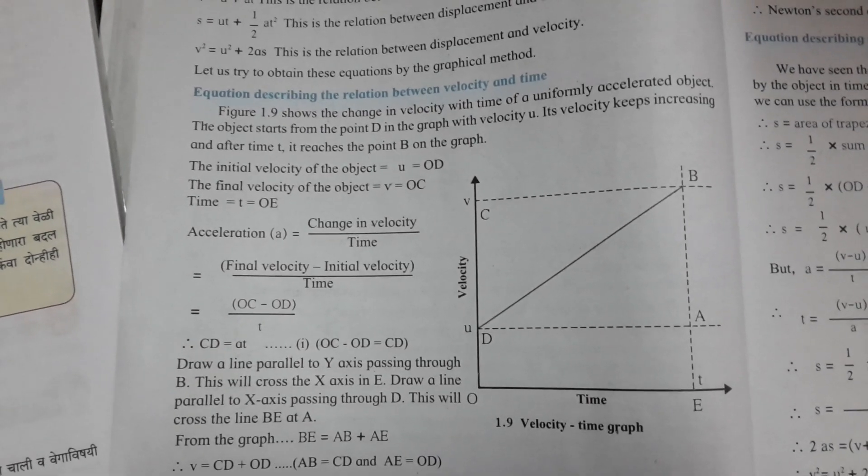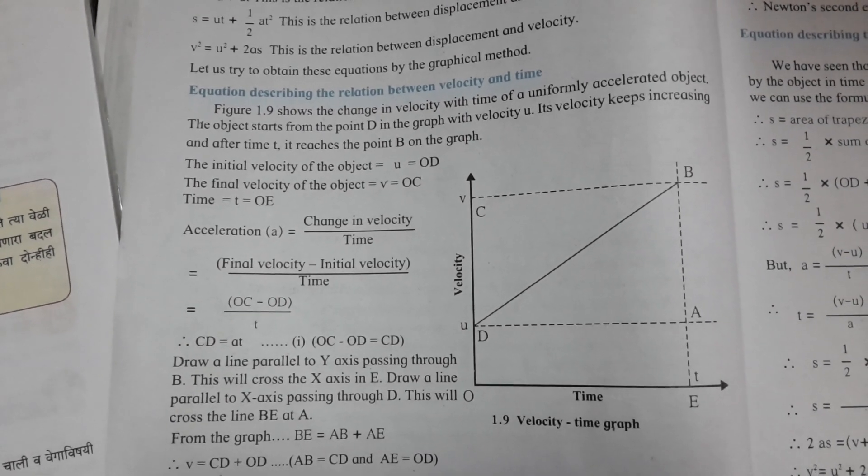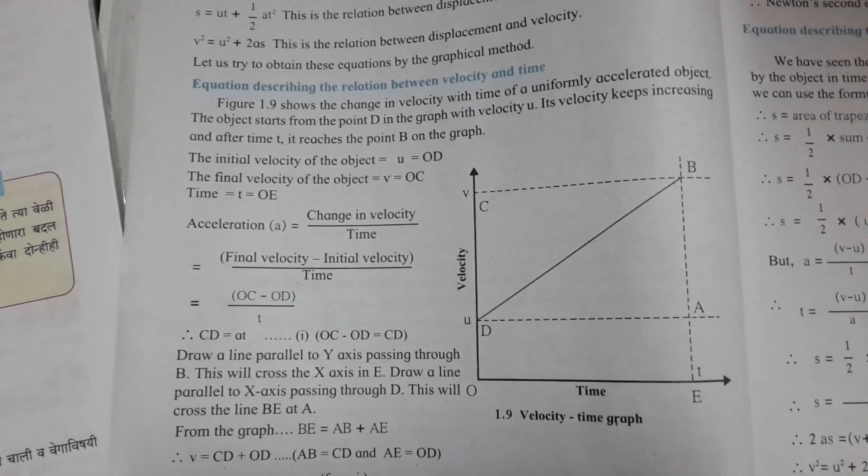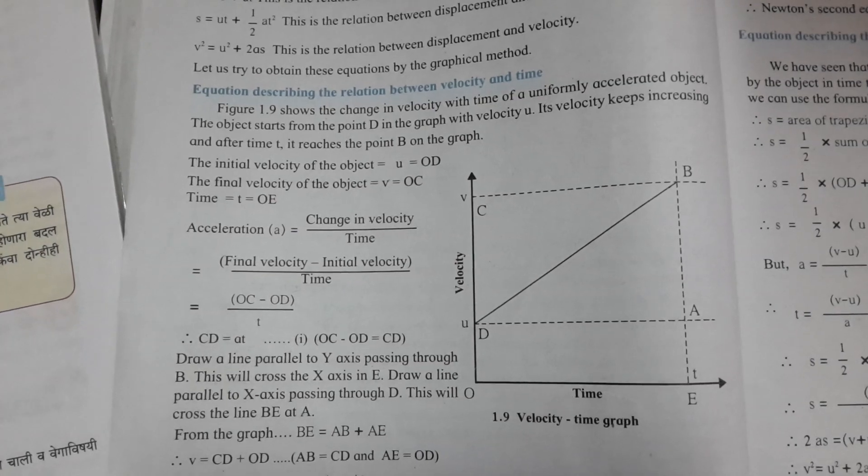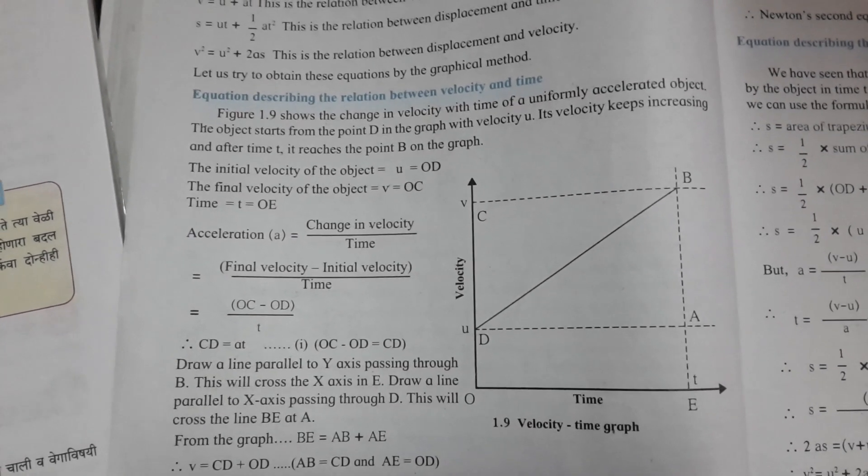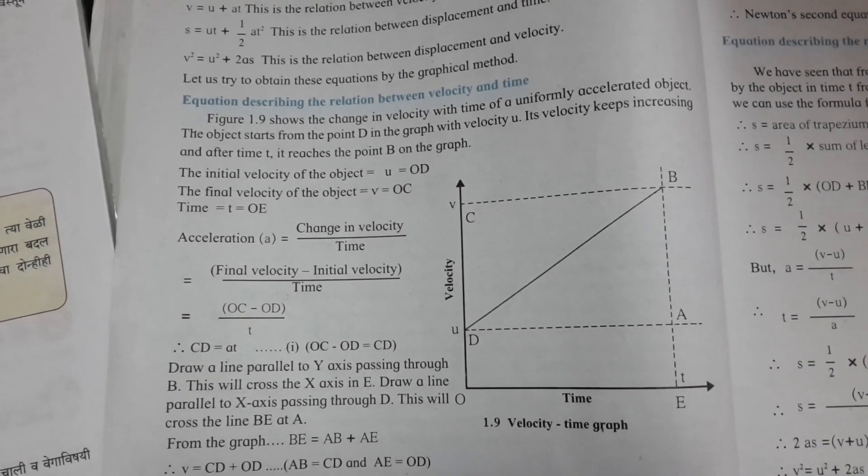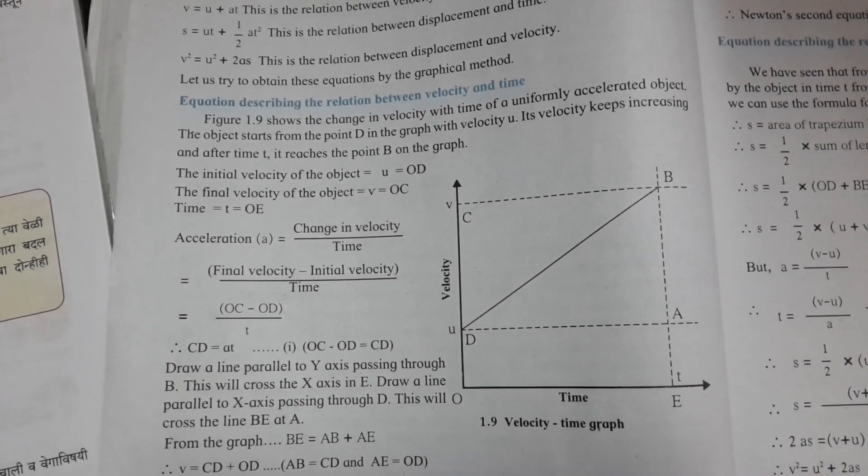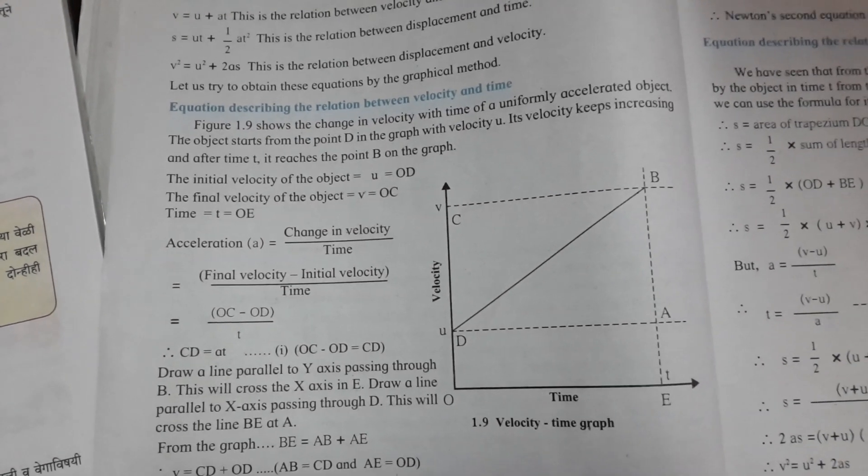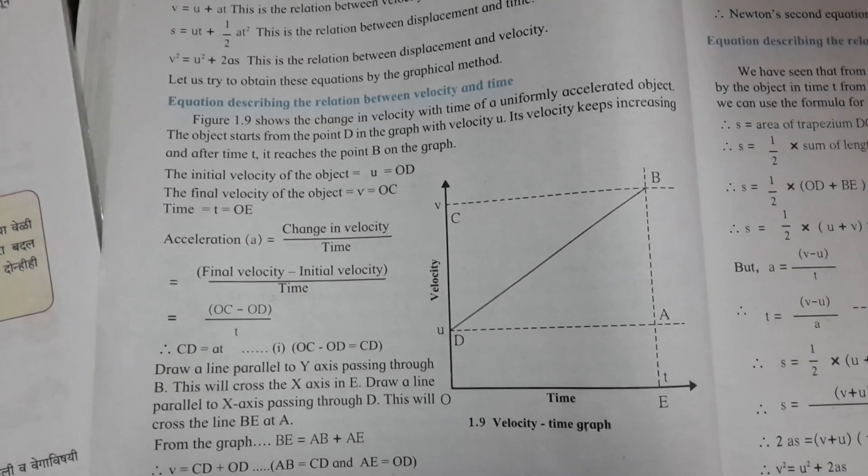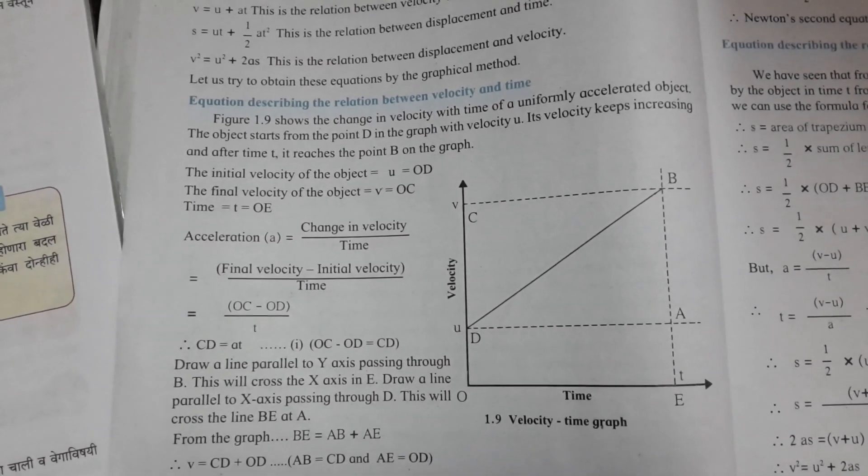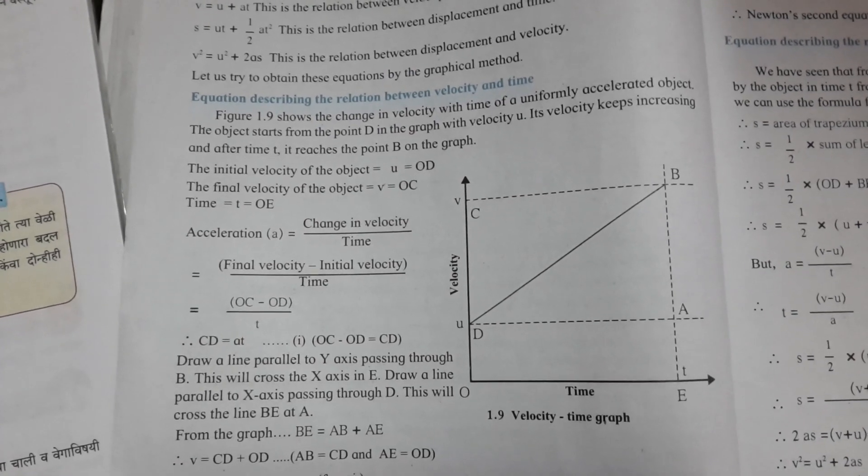The object starts from point D in the graph with velocity U. Its velocity keeps increasing and after time T, it reaches point B on the graph.